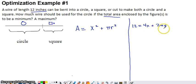What I'm going to choose to do here is solve for x. So if I'm solving for x, I'm going to subtract 2πr from both sides, divide by 4, and I end up with this as what x equals.